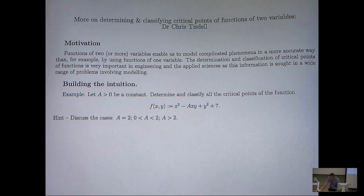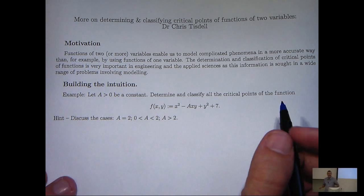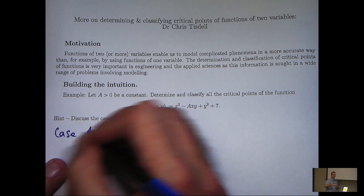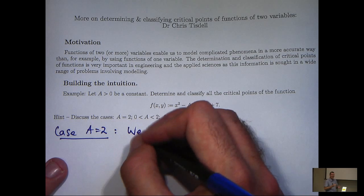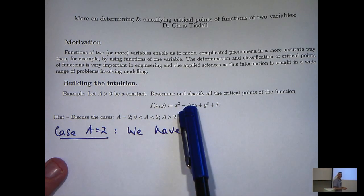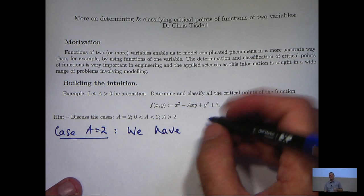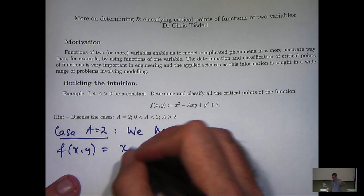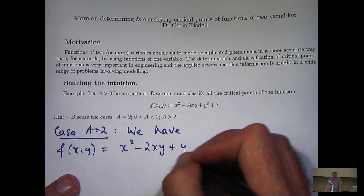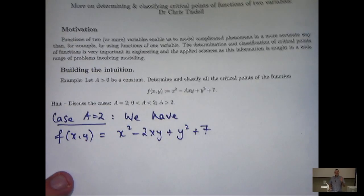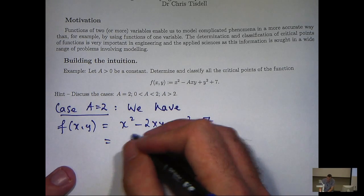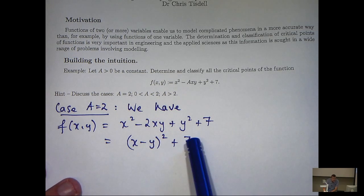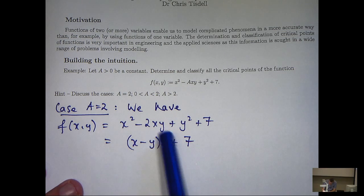Now for this particular example, let's build our intuition. I'm going to discuss the case a equals two first. I can see just from the nature of f that if I have a two for a, then I can factorize the first three terms. In particular, I can factorize down to something that will give me a positive value of f. If x equals y, then this is zero and I'm left with seven.